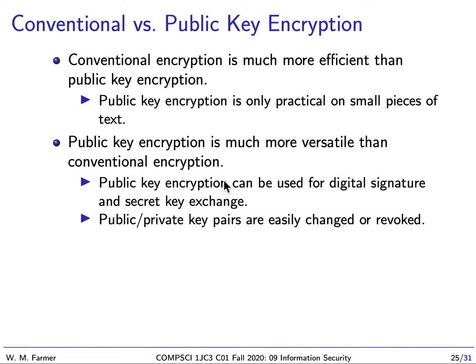In previous lectures we talked about conventional encryption and public key encryption. Let's compare these two. Both kinds of encryption allow us to encrypt plain text and produce ciphertext, and then decrypt the ciphertext to produce plain text. Conventional encryption is much more efficient than public key encryption — public key encryption is not really practical for large pieces of text. Public key encryption is much more versatile because we can use it for digital signatures and for secret key exchange.